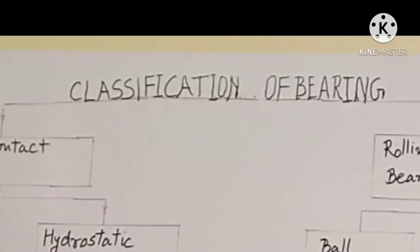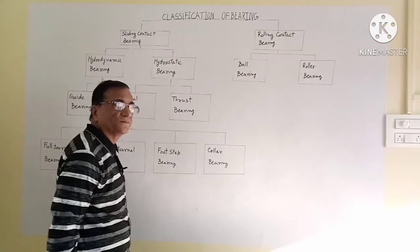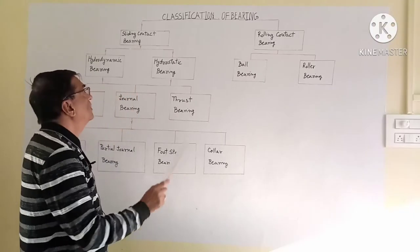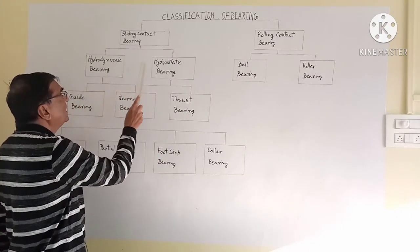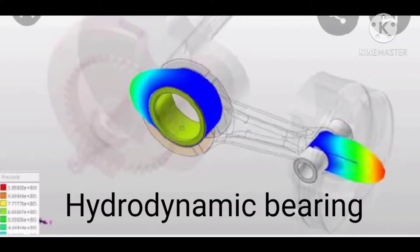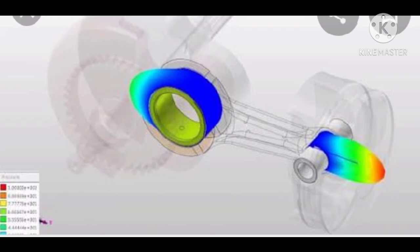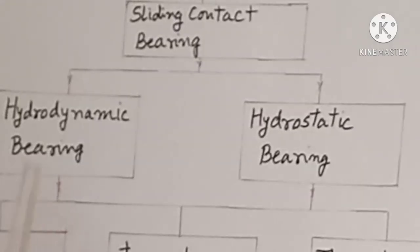Sliding contact bearing and rolling contact bearing. Sliding contact bearings are further classified as hydrodynamic bearing and hydrostatic bearing.